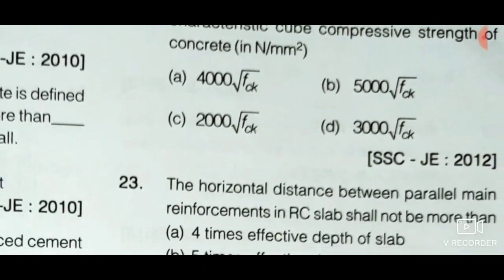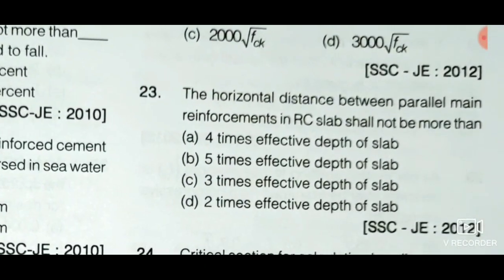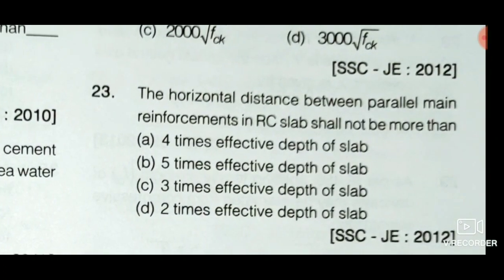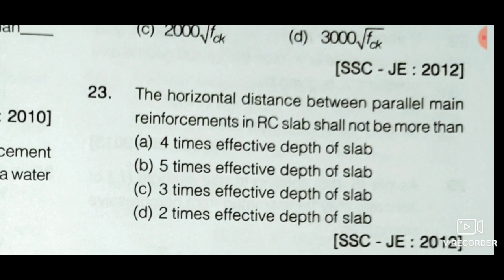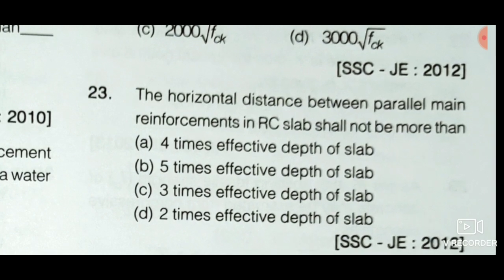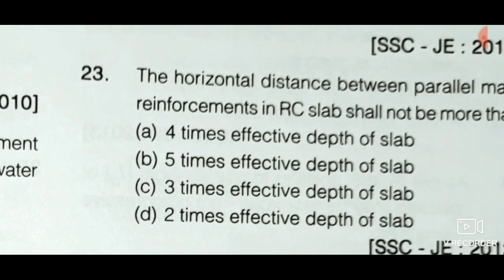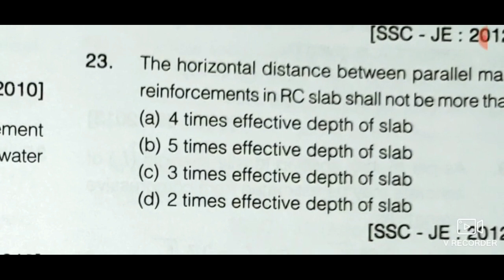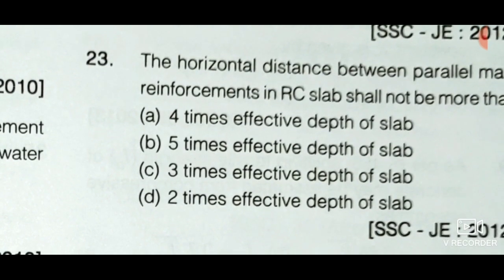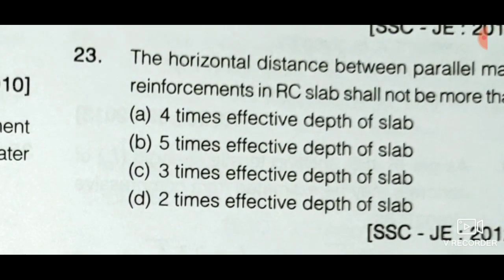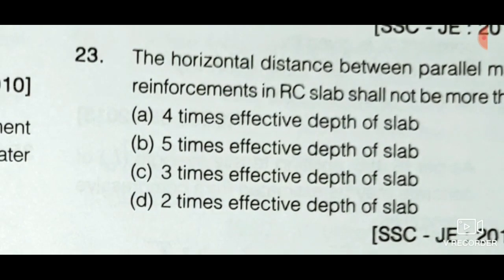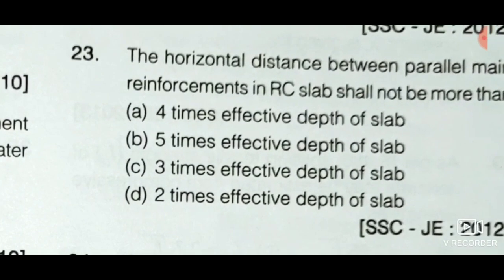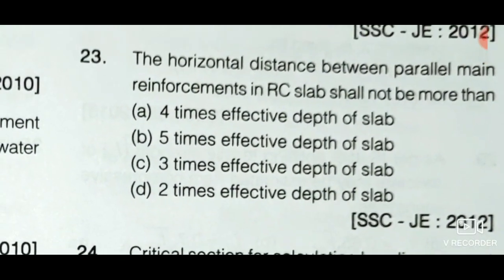Next question: The horizontal distance between parallel main reinforcement in an RC slab shall not be more than — option A: 4 times effective depth, option B: 5 times effective depth, option C: 3 times effective depth, and option D: 2 times effective depth. The horizontal distance between parallel main reinforcement bars shall not be more than 3 times the effective depth of the solid slab or 300 mm, whichever is smaller. So option C is the correct answer.